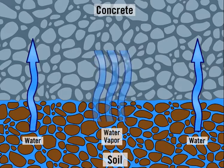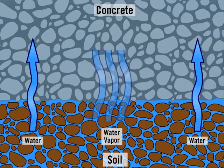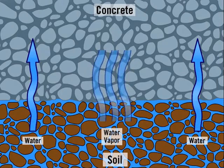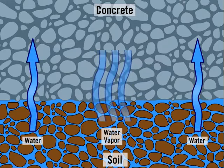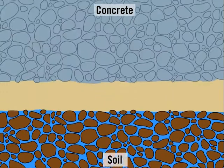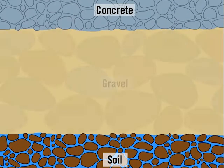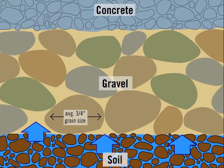If a foundation gets wet, it can eventually cause damage, such as mold, mildew, and cracking. To combat this, standard construction practices use a layer of gravel between the soil and concrete, where gaps in the gravel are wide enough that capillary action doesn't work.